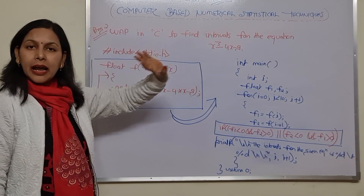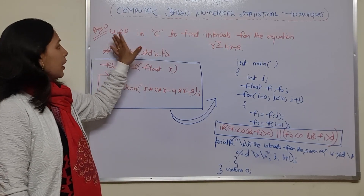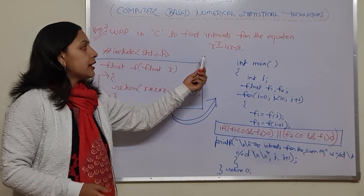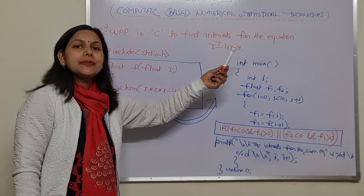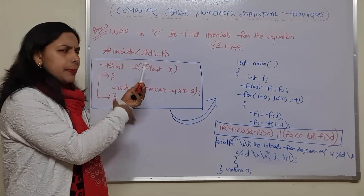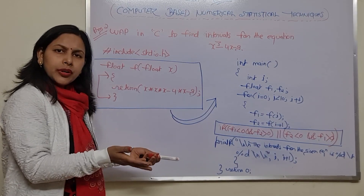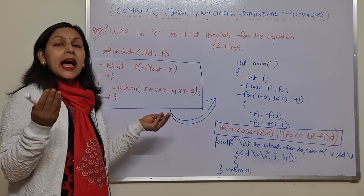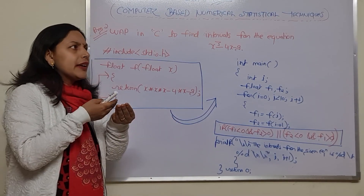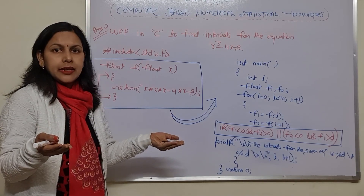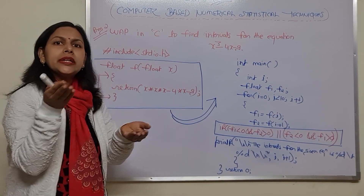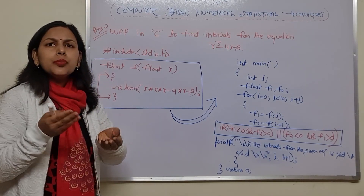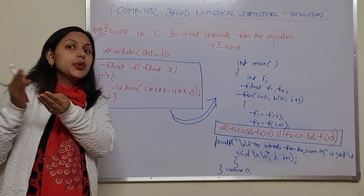This is the program which you have to make: write a program in C to find the intervals for the given equation, that is x cubed minus 4x minus 9. Once you create the program for it, you could change the equations. You could change the equation as well as the values for x — like instead of 0 to 10, you could take the intervals between 2.3 till 2.10.